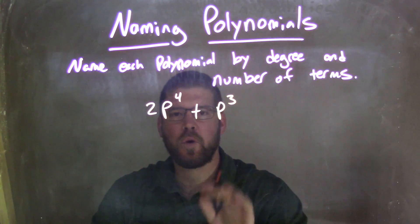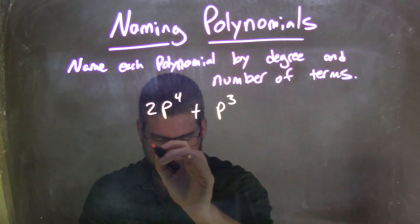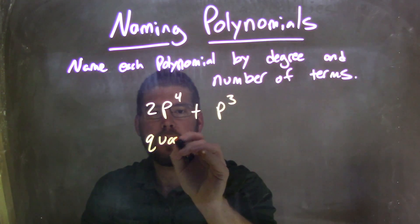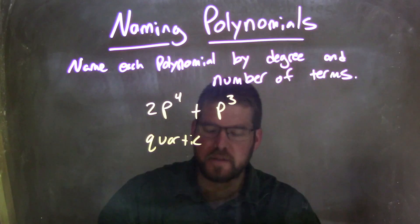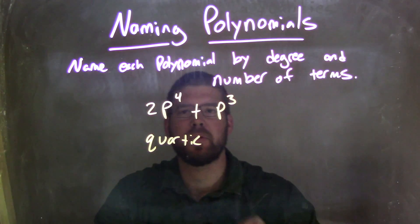Since the highest degree is 4, we call this a quartic. So we have a quartic polynomial here.